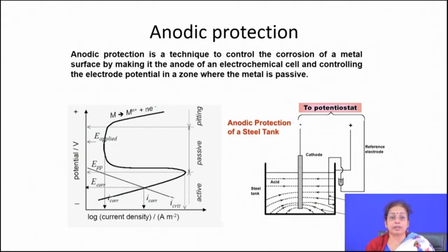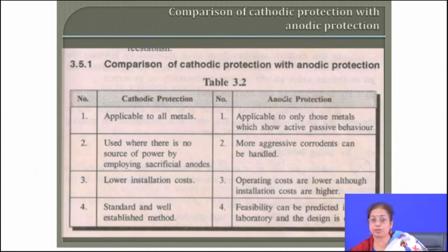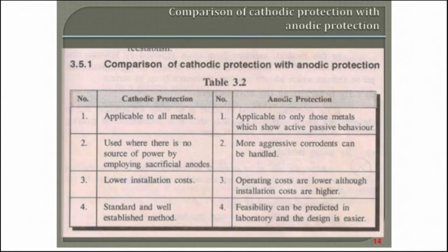That passive film helps in reducing the corrosion rate further. This is the case of self-passivation by anodic current, and the component gets protected. Anodic protection is applied only for those components which are very prone to corrosion, where there is formation of a passive film that is highly protective in nature. Cathodic protection is more versatile and can be applied for any materials to get rid of any kind of aqueous corrosion problem.